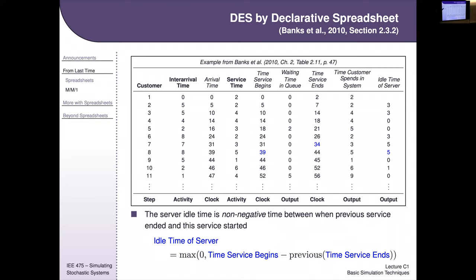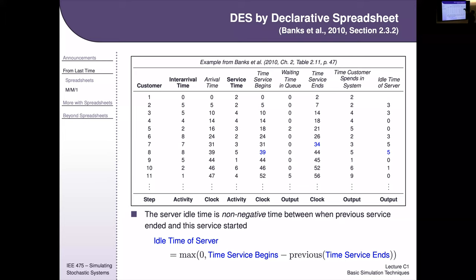You end up populating a large grid where every cell is related mostly to cells in its current row and maybe one or two cells from the previous row. To follow the time trajectory, you sometimes have to squint and look around, because time is a bit smeared out — but all the same information is there.